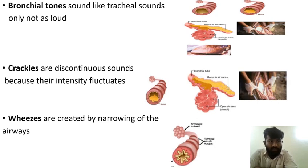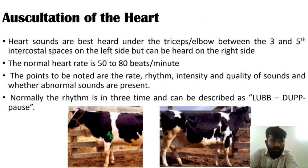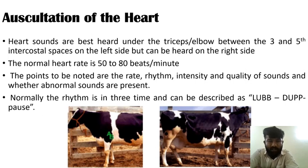After auscultation of lungs, it is auscultation of the heart. Heart sounds are best heard under the triceps, at the elbow, between the 3rd and 5th intercostal spaces on the left side, but can also be heard on the right side. The normal heart rate is 50 to 80 beats per minute. The points to be noted are the rate, rhythm, intensity, and quality of sounds, and whether abnormal sounds are present.